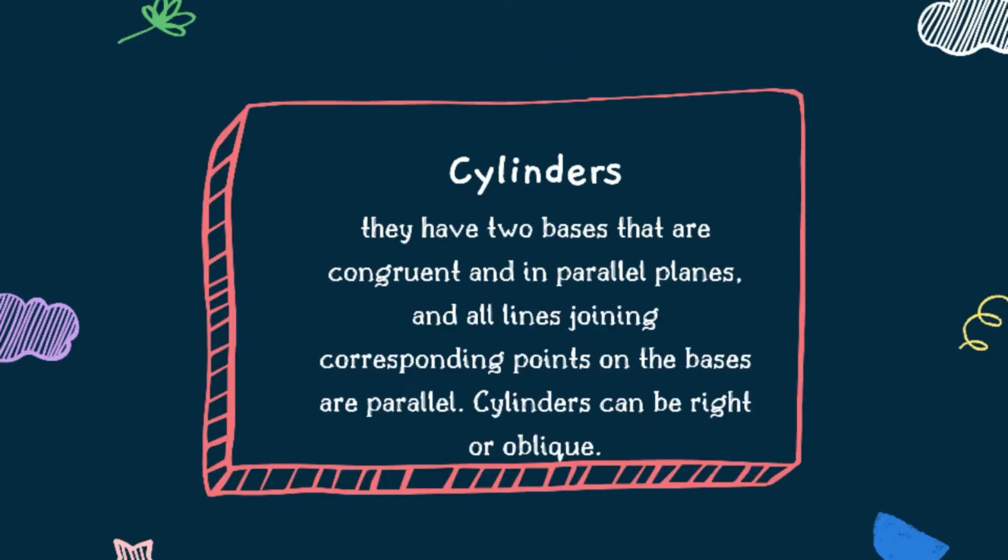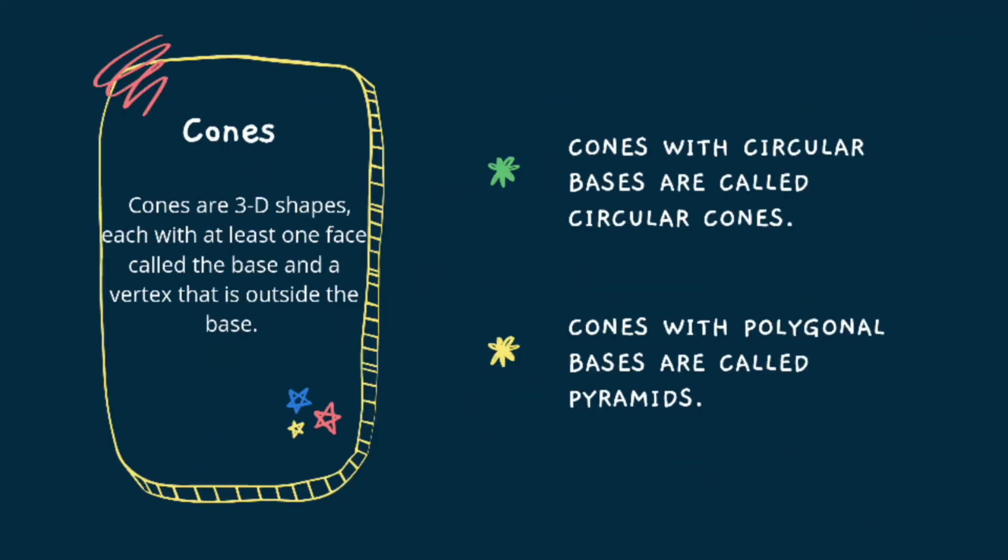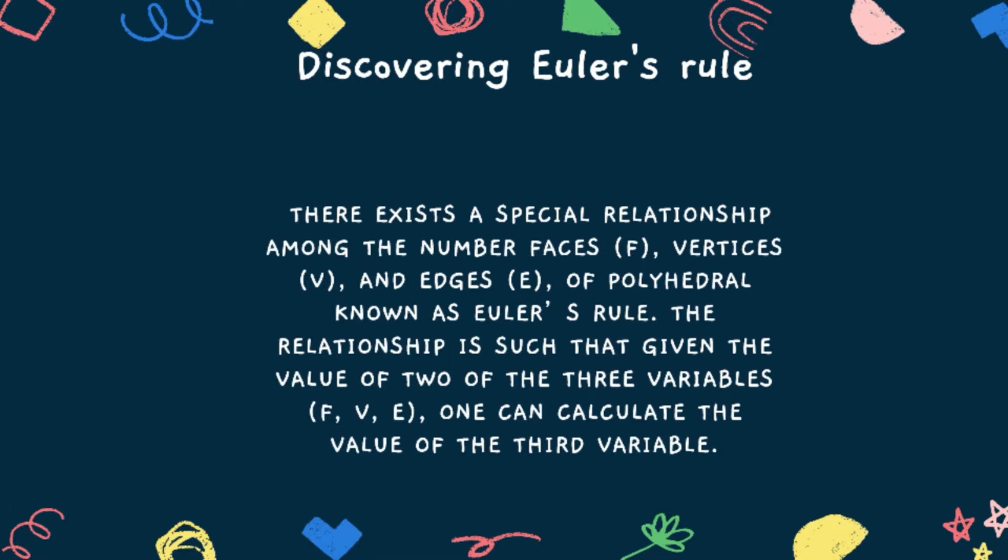Now let us proceed to the cylinders. They have two bases that are congruent and in parallel planes and all lines joining corresponding points on the bases are parallel. Cylinders can be right or oblique. A right cylinder has its elements perpendicular to the bases. Prisms are shapes with polygons as bases. Cones are three-dimensional shapes each with at least one face called the base and a vertex that is outside the base. There are two classifications: first is cones with circular bases called circular cones, second cones with polygonal bases called pyramids.